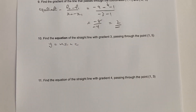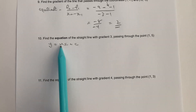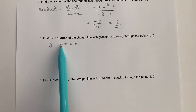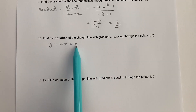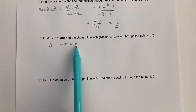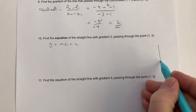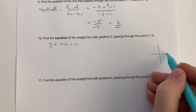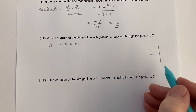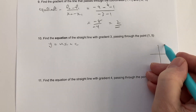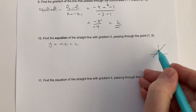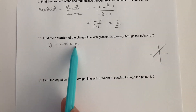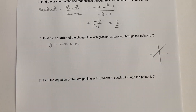Now you might know that slightly differently, but essentially what we're looking at is m is the gradient, which we're told is three, and c is what's called the y-intercept. So if I plot this line and it goes through something like that, this point here is going to be this value of c — it's the constant.